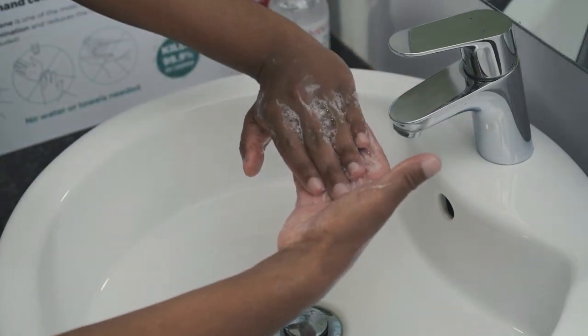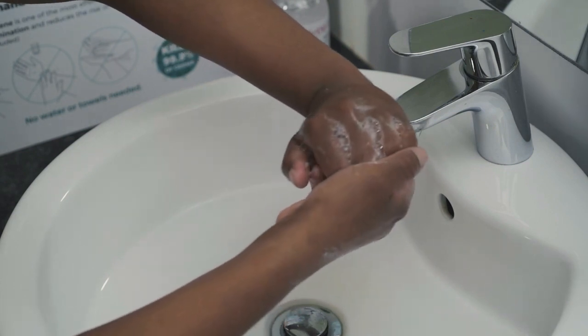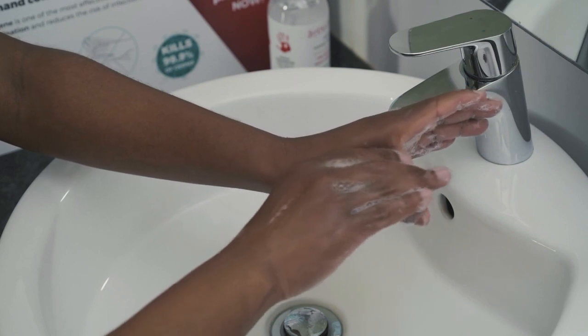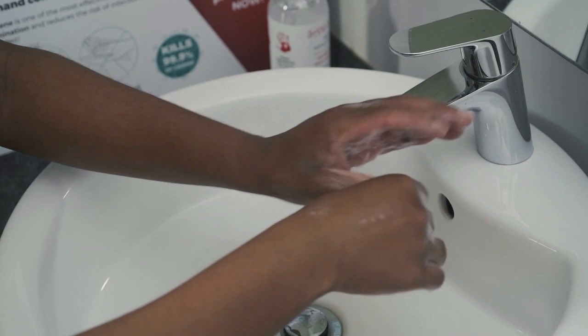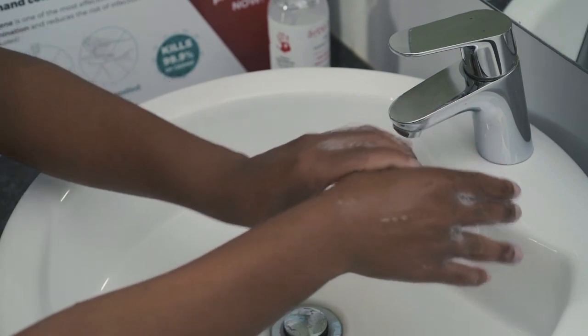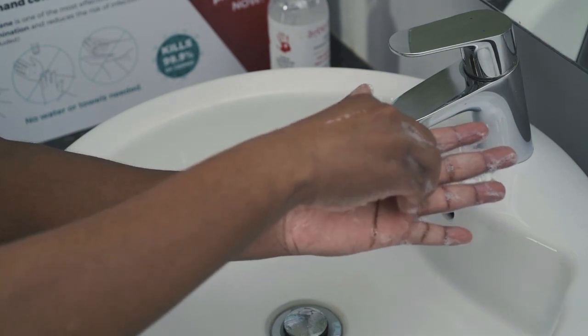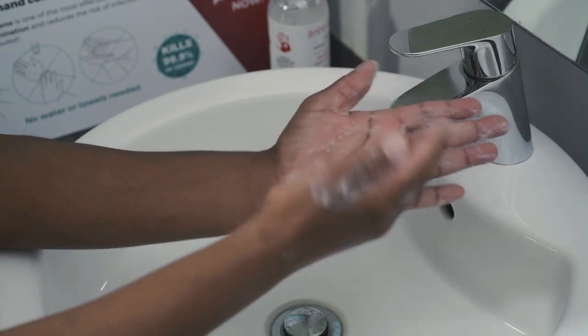Place the back of your fingers against the opposing palm with interlocked fingers and rub up and down. Then rotate your left thumb inside of your clasped right palm and switch your hands around. For the final motion, move your fingers in a circular pattern on your palms. Do this on both palms.